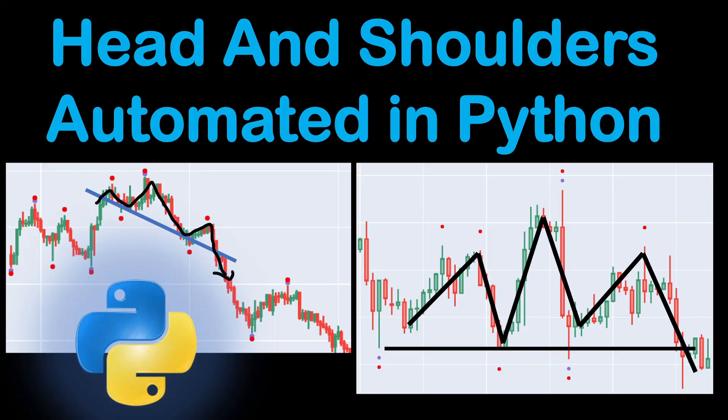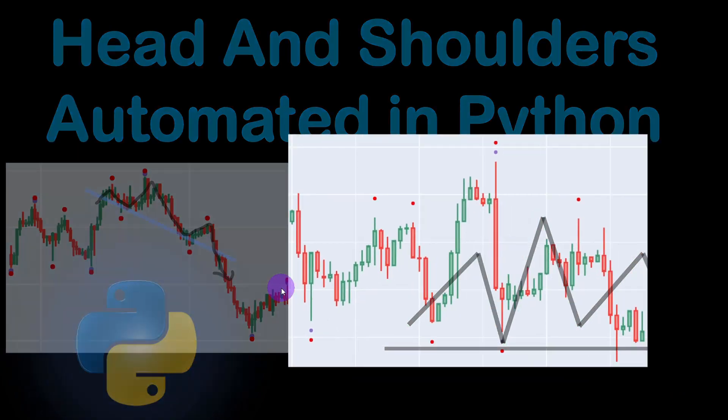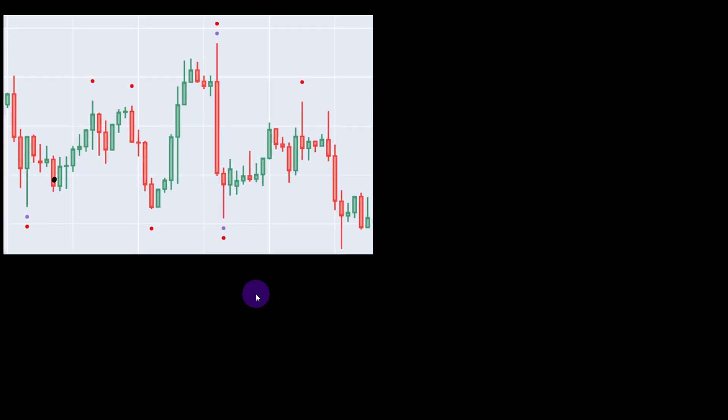Detection of head and shoulders price patterns can be automated in Python, so you don't have to sit behind your screen all the time. Ideally you would have a program reading the market for you and sending you phone alerts signaling market opportunities. The head and shoulders pattern is visible when we have a formation of a high, followed by a higher high, then a dip in the price, then another high that is weaker than the central peak, which we call the head.